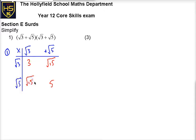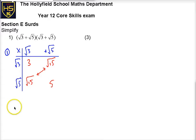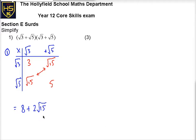Now it's worth checking to see whether we can simplify these two surds we've got here. The only square number that goes into them is 1, so we can't break them down any further into anything useful. So what we get is a plus and two lots of root 15. Root 15 plus root 15 is 2 root 15. So that's it — it's simplified. In this case we don't get three terms in the answer; we've happened to get two terms. You have to simplify your surds as far as you possibly can, and that's it.